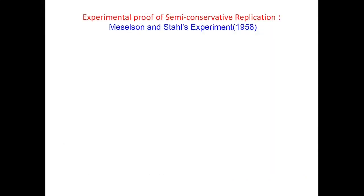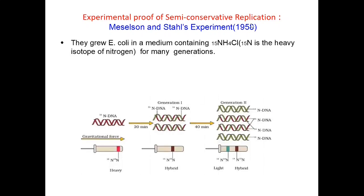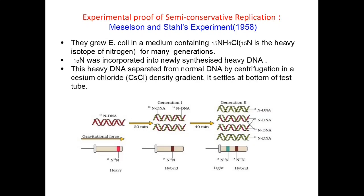Now let us discuss the experimental proof of semi-conservative DNA replication. The experiment was performed by Meselson and Stahl in 1958. They grew E. coli in a medium containing ammonium chloride where N15 is the heavy isotope of nitrogen, for many generations. N15 was incorporated into the newly synthesized heavy DNA. As you can see, this is the heavy DNA — both strands contain N15.